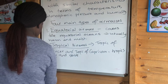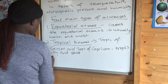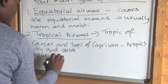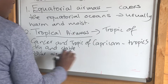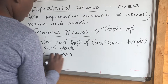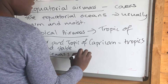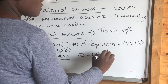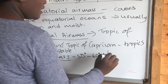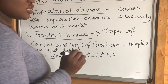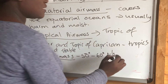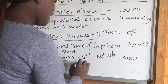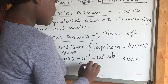Number three, we have the polar AMSs. Polar AMSs occur 50 to 60 degrees north or south of the equator. In terms of characteristics, these ones are cool and unstable.